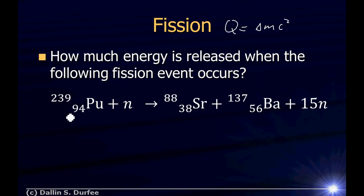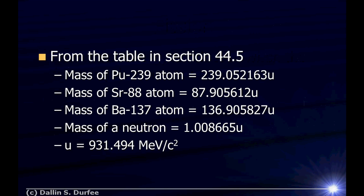When I look at my table I'm not going to get the masses of the nuclei, I'm going to get the masses of the atoms. So we'll take the mass of a plutonium 239 atom minus 94 times the mass of an electron plus the mass of a neutron. Our final mass is the mass of our strontium 88 atom minus 38 electron masses, plus the mass of our barium 137 atom minus 56 electron masses, plus 15 times the mass of a neutron. 38 plus 56, that is 94. And our electrons balance out nicely. So I just have to worry about the masses of the atoms.